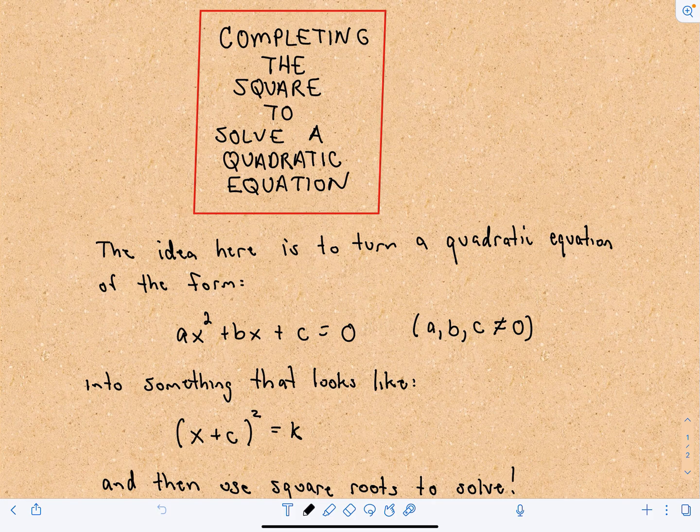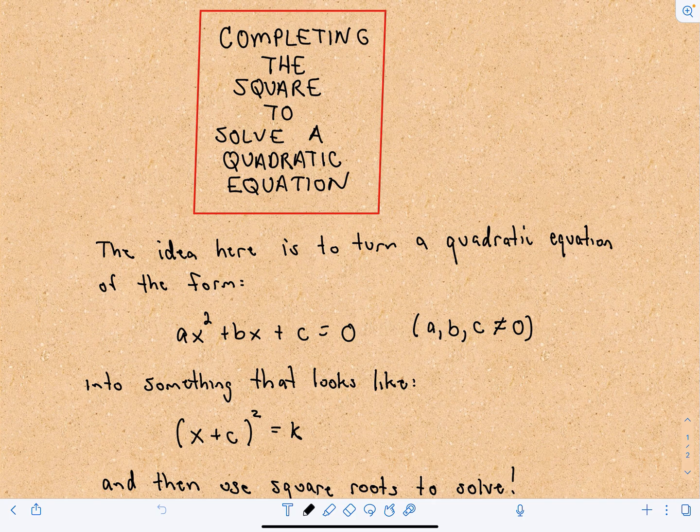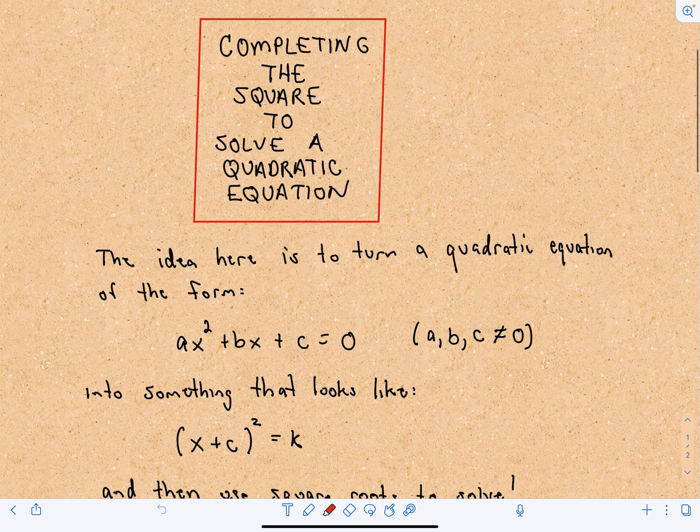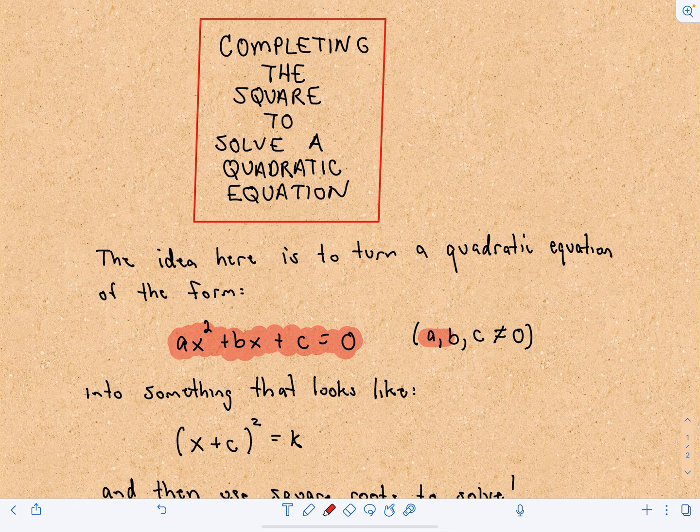Here we're going to look at using completing the square to solve a quadratic equation. The idea is we have a quadratic equation of the form ax² + bx + c = 0, and all three values a, b, and c are non-zero.